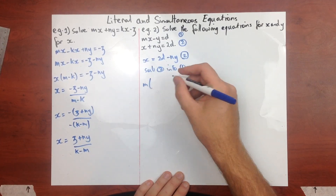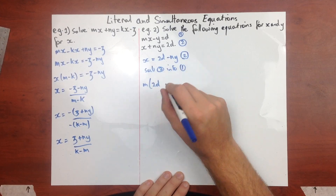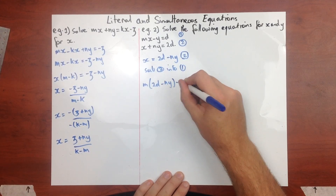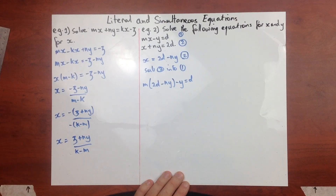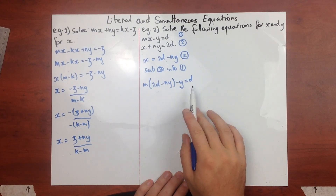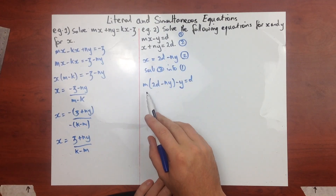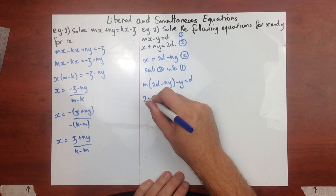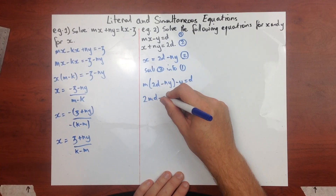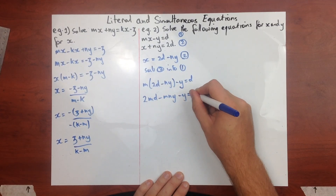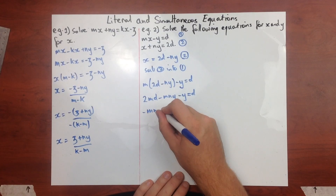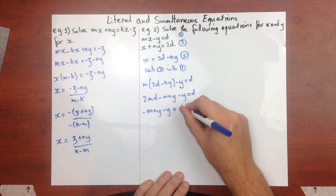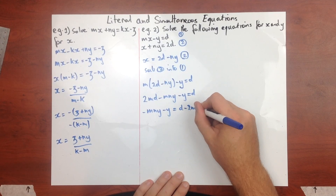Replacing x with the expression from equation two, we get m times (2d minus ny) minus y equals d. I'll expand this to get 2md minus mny minus y equals d, then rearrange: negative mny minus y equals d minus 2md.